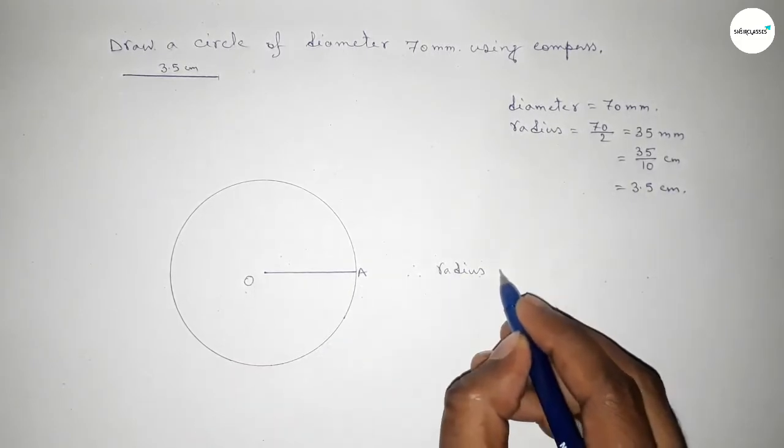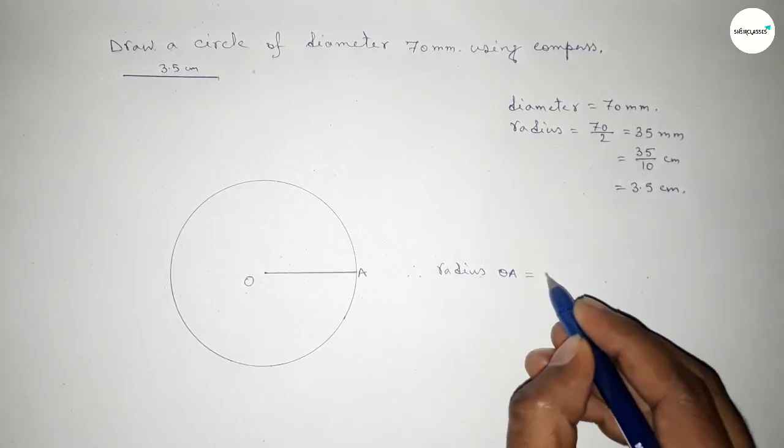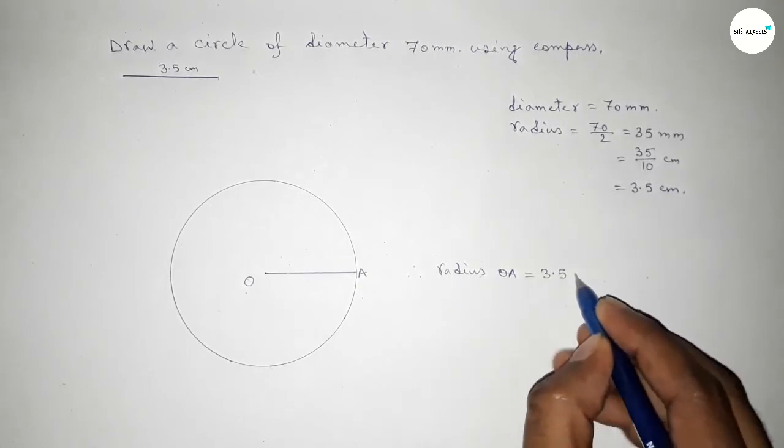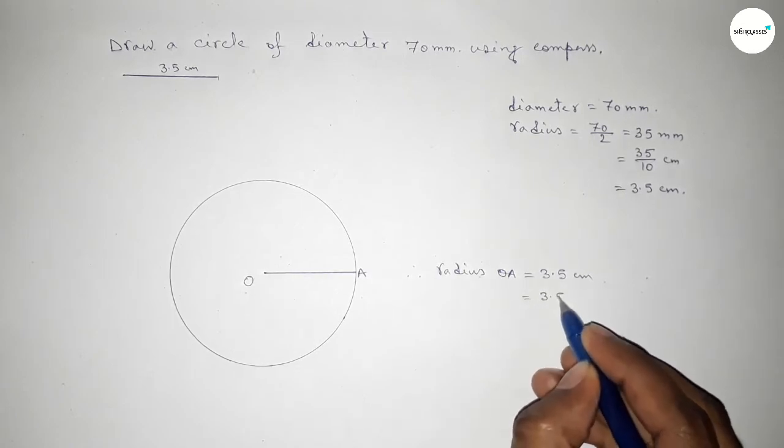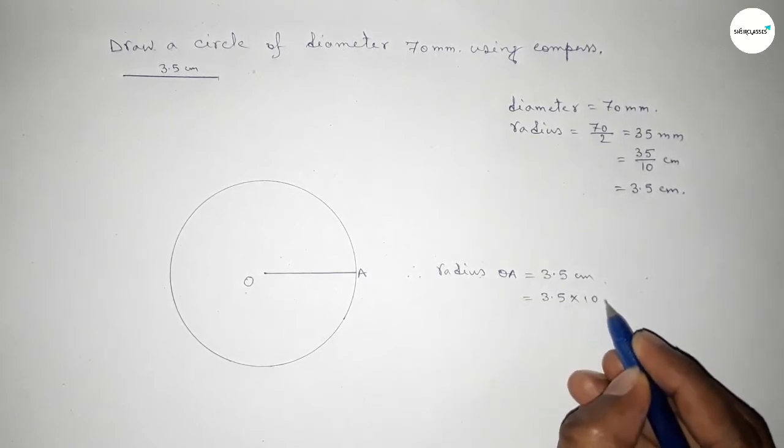Radius OA equal to 3.5 centimeter. Now converting centimeter into millimeter, then multiplying by 10, so this is 35 millimeter.